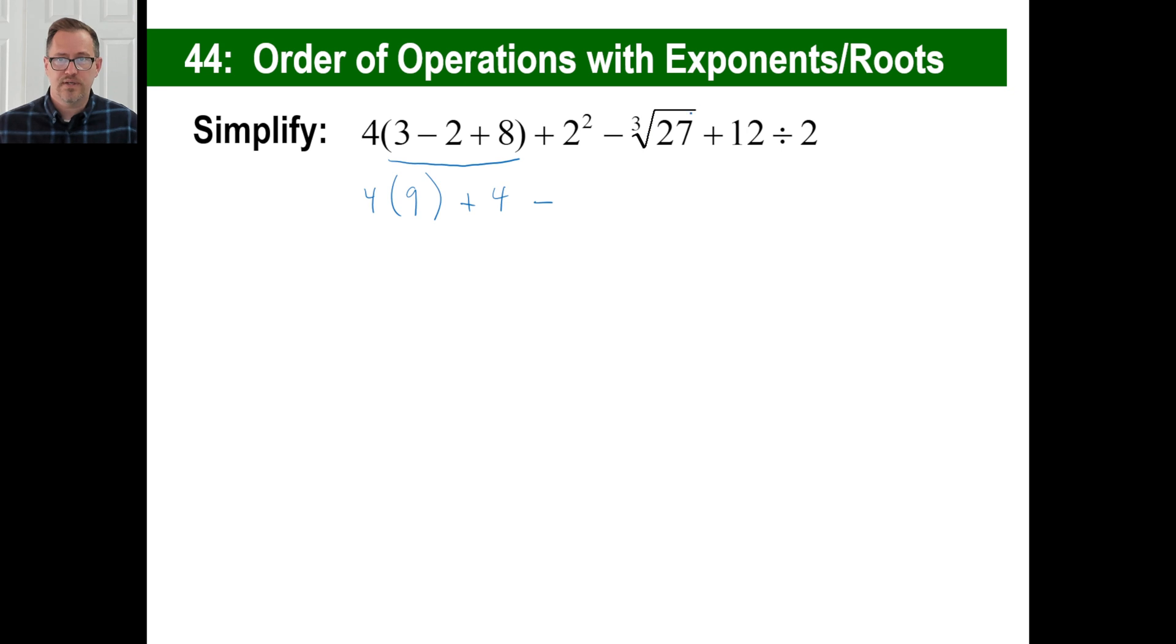Two to the second power is two times two. Boom. There. The cube root of 27, what number times itself three times gives you 27? Well, the answer is three.